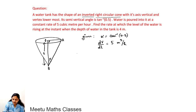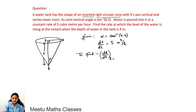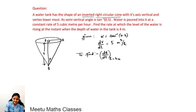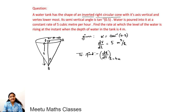We are supposed to find dh/dt, the rate of change of the height of water in the tank, when the depth of water is 4 meters. Let the base radius of the water surface be r.